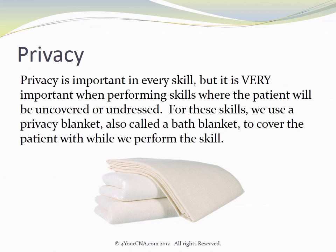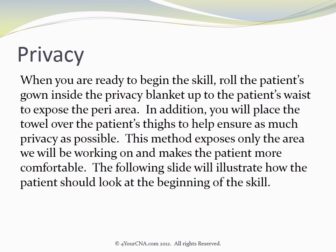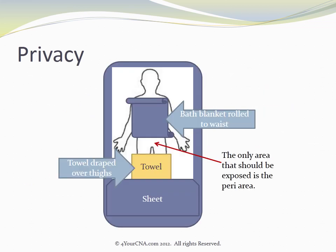Privacy is important in every skill, but it is very important when performing skills where the patient will be uncovered or undressed. For these skills, we use a privacy blanket, also called a bath blanket, to cover the patient while we perform the skill. When you are ready to begin, roll the patient's gown inside the privacy blanket up to the patient's waist to expose the peri area. You will also place the towel over the patient's thighs to help ensure as much privacy as possible. This method exposes only the area we will be working on. Notice that the bath blanket is rolled to the waist, the towel is draped over the thighs, and the only area exposed is the peri area.